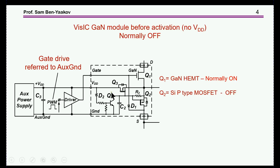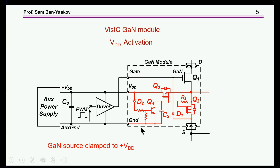The way it is done is to have a series silicon transistor. Q2 is a silicon transistor which, without an auxiliary power supply, is in the OFF state. This is a P-channel transistor and the gate is connected to the source, so this transistor is non-conducting — even if you have a high voltage at the power supply, this assembly will not conduct. When there is an auxiliary power supply, Q2 is turned on via a BJT transistor, and the path is open for the GAN transistor to conduct.